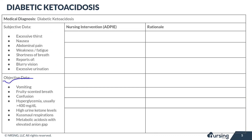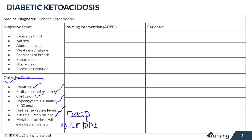For the objective data, you're going to see vomiting, the patient may have fruity scented breath, confusion, hyperglycemia — so blood sugar level is usually greater than 400 — high urine ketone levels, and Kussmaul respirations, which are deep labored breathing often associated with metabolic acidosis. When you look further into the blood, you'll potentially see high ketone levels as well. With the metabolic acidosis, you're going to see an elevated anion gap.